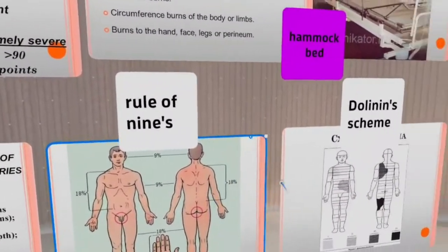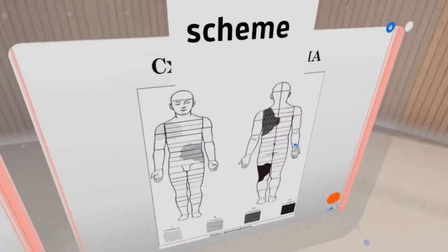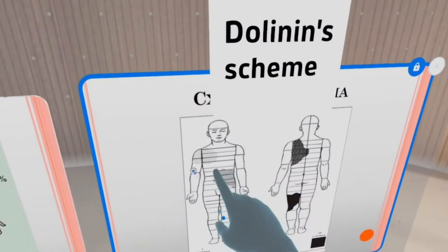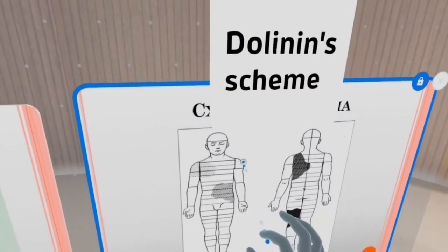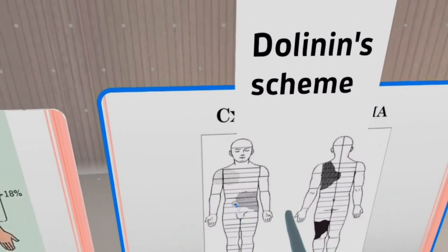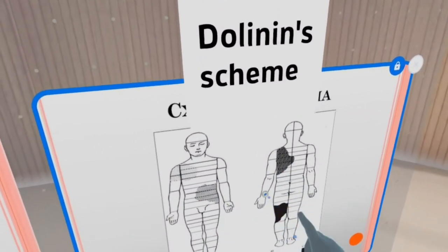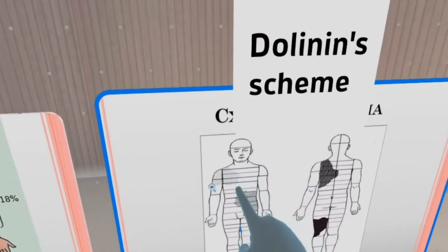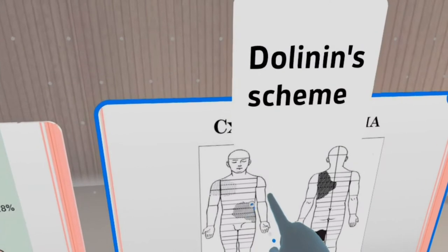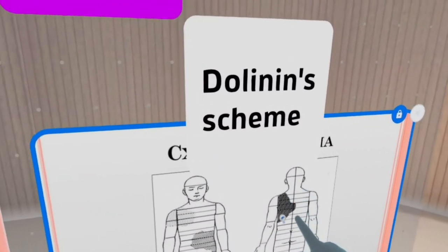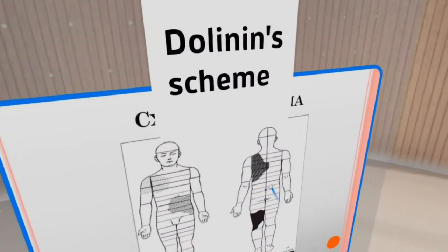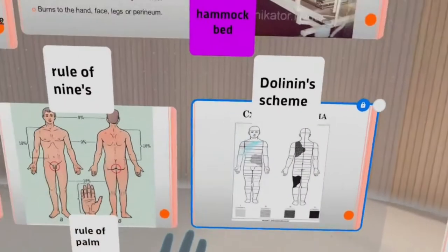Another tool used in hospitals is the Dolinin scheme — a diagram used to document patient cases. Each part of the body is separated into regions, and you can mark and shade the burned areas. Different colors or pencils are used to define the degree of burn. For example, this patient has the right front shoulder burned at first degree, the left side of the abdomen at second degree, the left shoulder blade area at third degree, and the back of the left thigh at fourth degree.